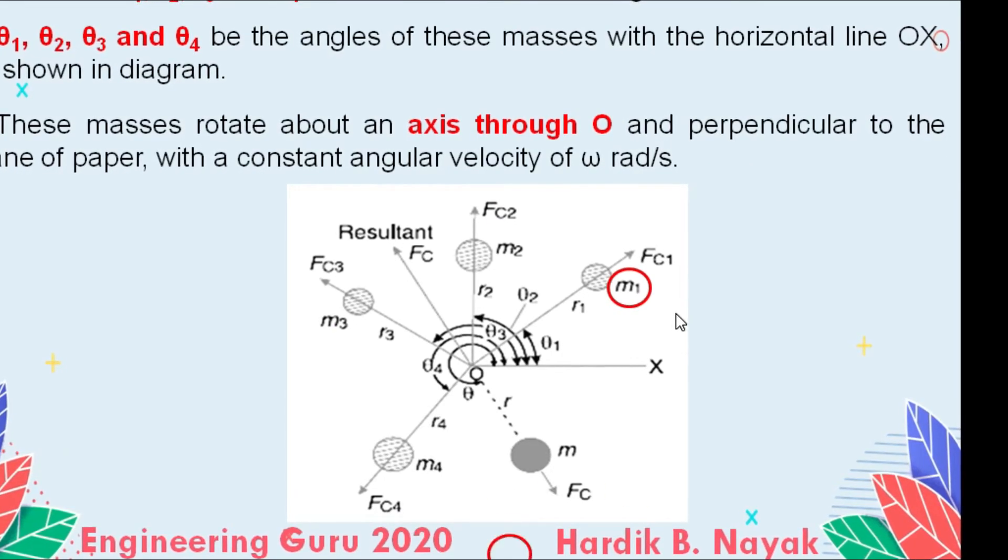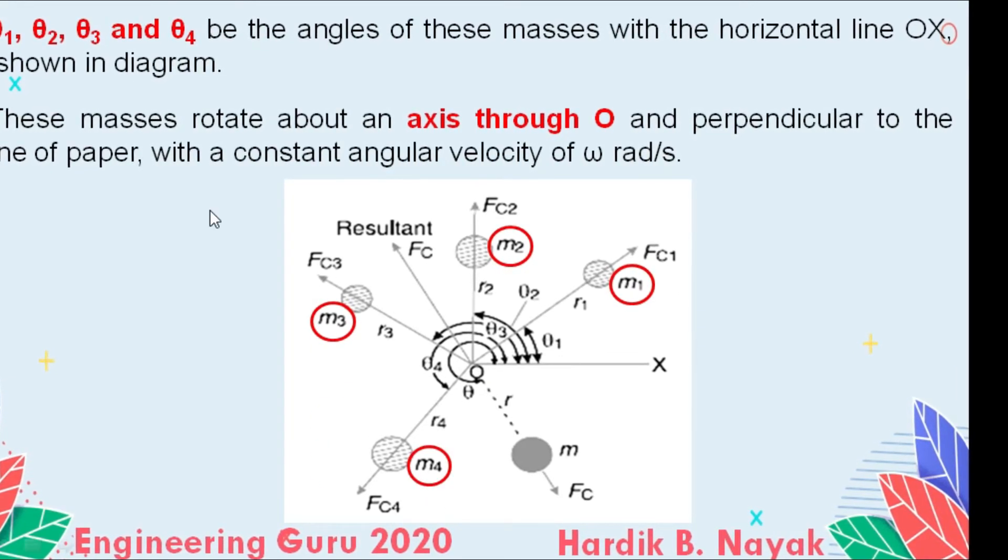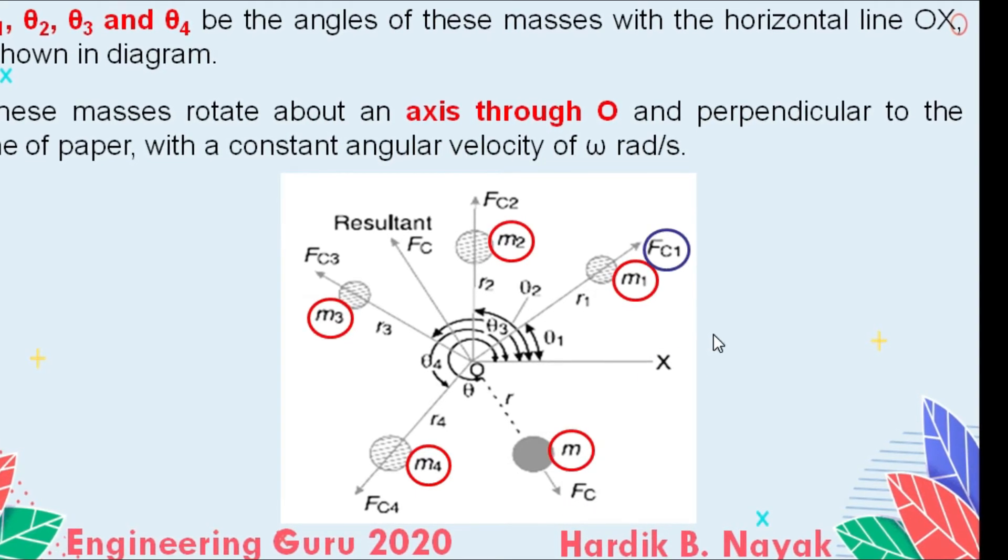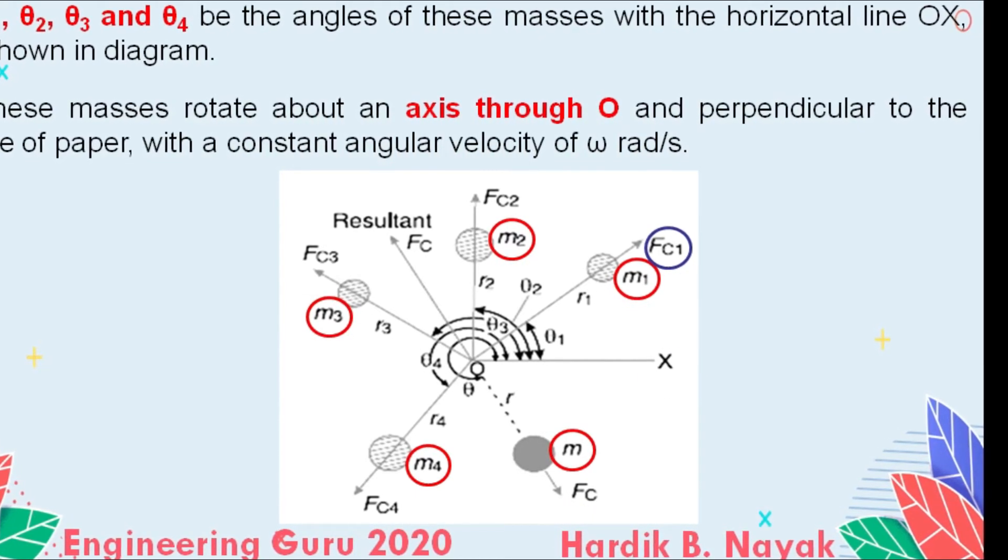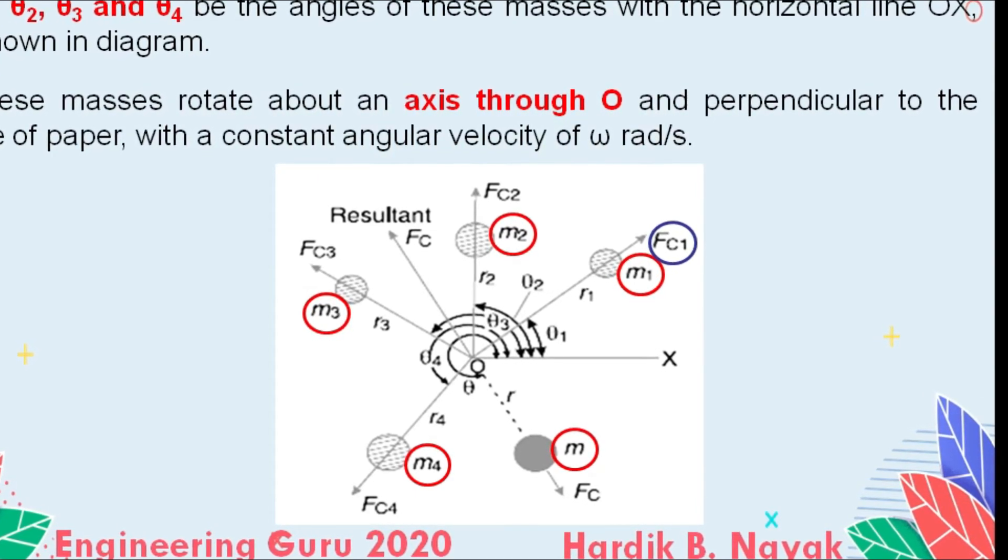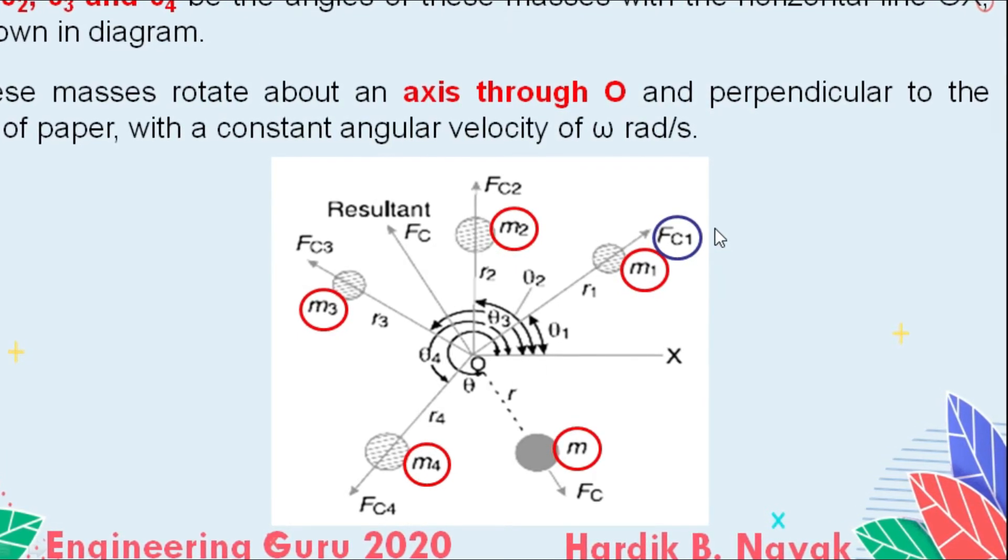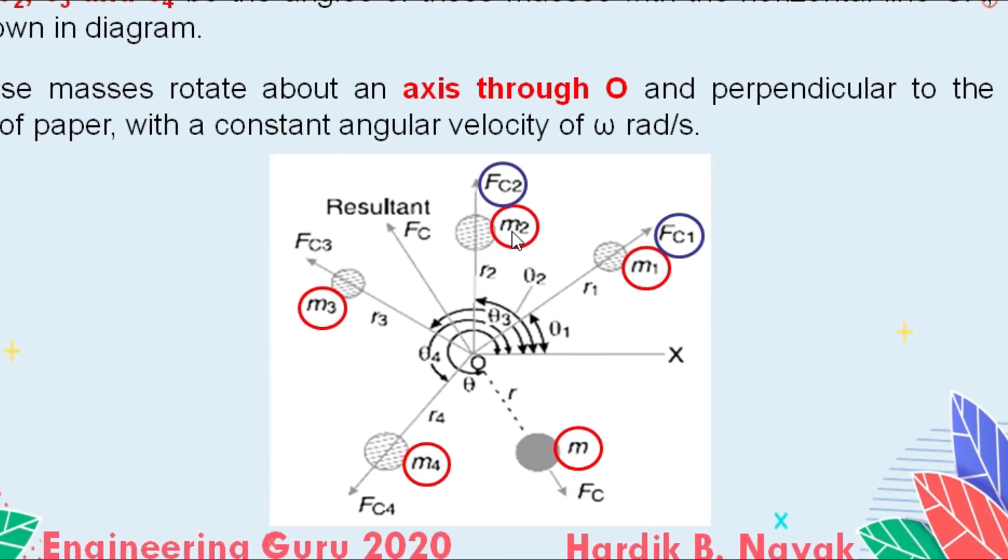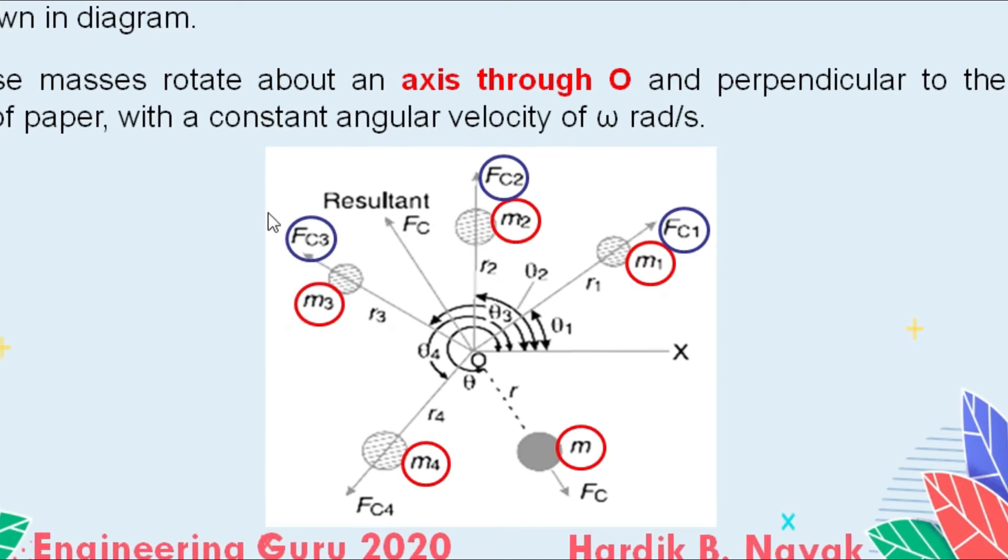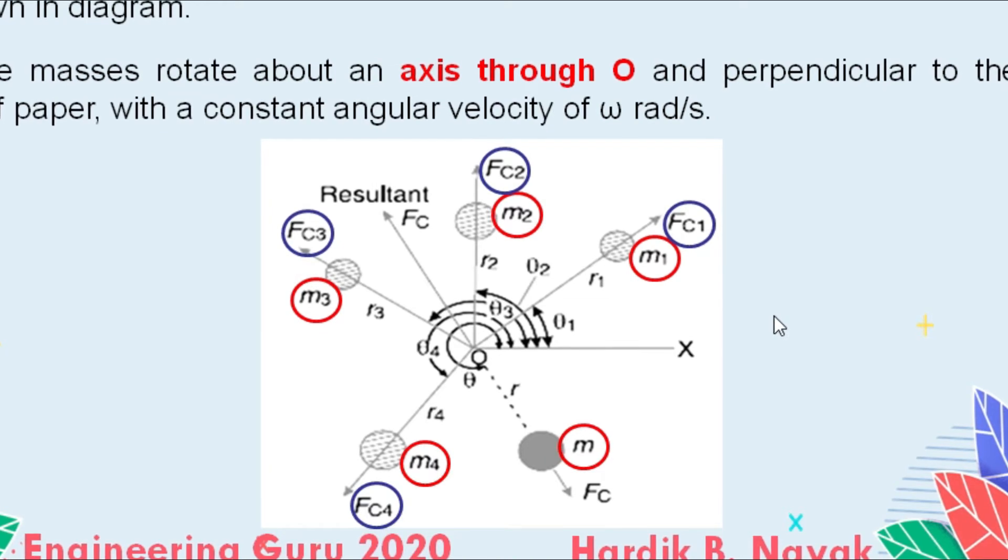Now we will understand using this figure. In this figure, you can see four different masses: M1, M2, M3, and M4. Their centrifugal forces, always pointing outward from the mass, are Fc1 for mass M1, Fc2 for mass M2, Fc3 for mass M3, and Fc4 for mass M4.